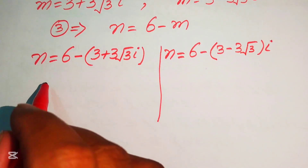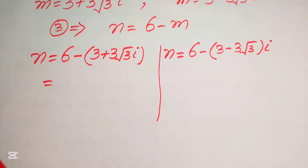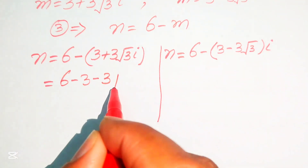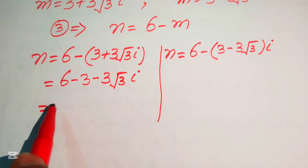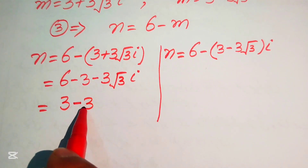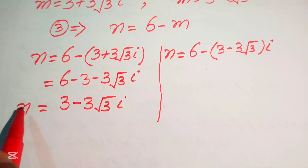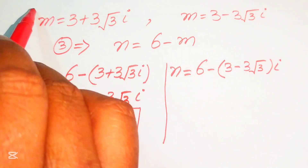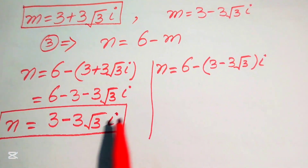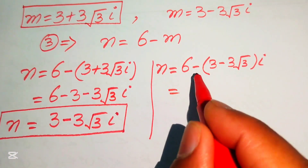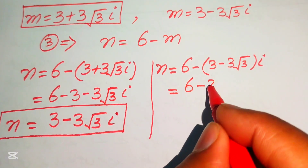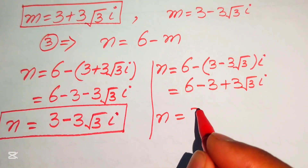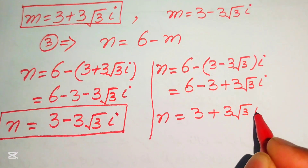We distribute the negative sign. For the first case: 6 minus 3 minus 3 root 3 iota, which simplifies to 3 minus 3 times square root of 3 iota. This is the value of n corresponding to m equals 3 plus 3 root 3 iota. For the second case, distributing gives 6 minus 3 plus 3 root 3 iota, which simplifies to 3 plus 3 times square root of 3 iota.